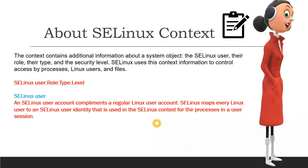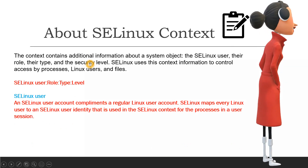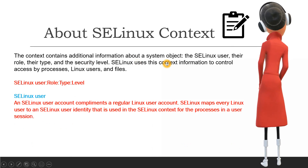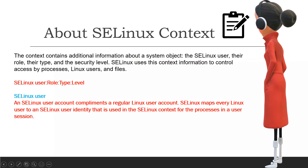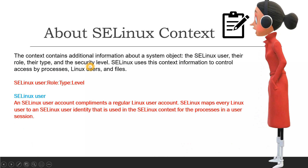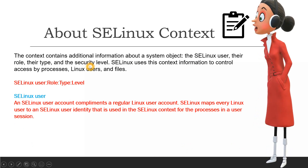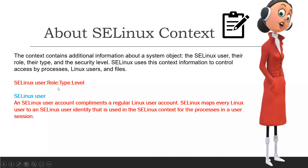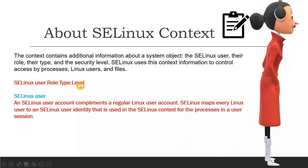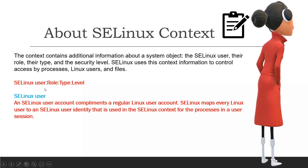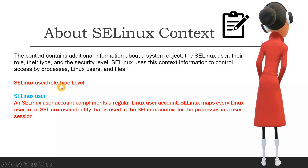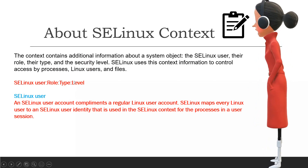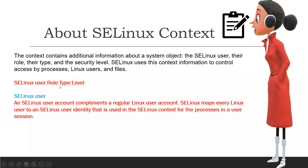The SELinux context contains additional information about a system object: the SELinux user, their role, their type, and the security level. The labeling is divided into four parts — user, role, type, and level — as you can see. SELinux uses this context information to control access by processes, Linux users, and files.